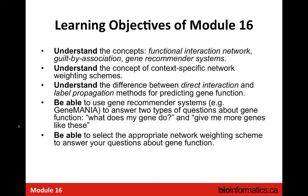Answering these questions involves understanding some key concepts. First, the functional interaction network, which Robin went over but it would be helpful for me to explain again. Second, guilt by association — if you interact with genes of a given function, that's evidence that you yourself have that function. And lastly, the gene recommender system. I'm going to focus on one particular interface called GeneMANIA, developed in my lab and Gary Bader's lab, and we'll also talk about the STRING interface.